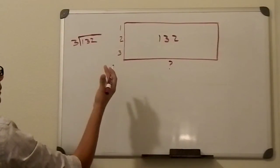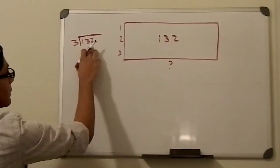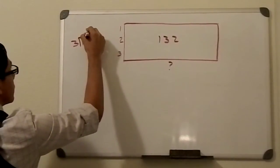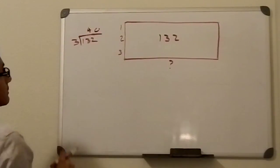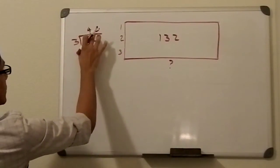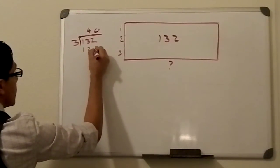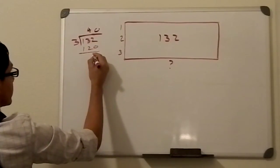It can't go in at all. So then we'll get 130, and it goes into 130 forty times. 40 times 3 is 120. Subtract that, we get 12.